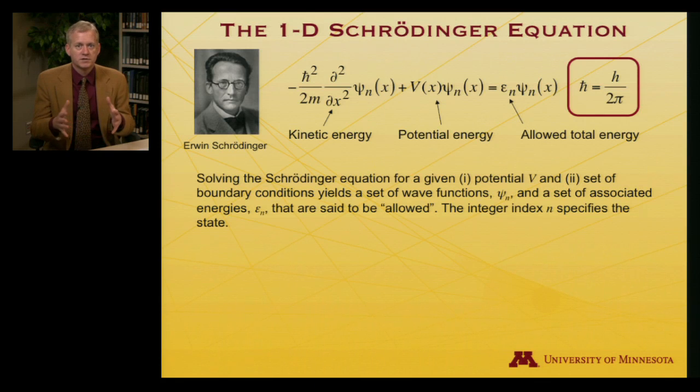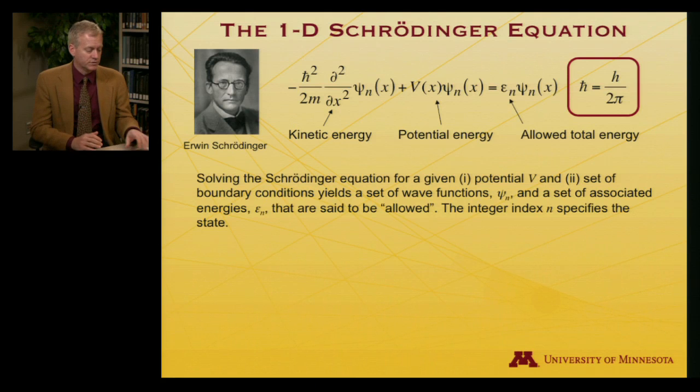It also defines a set of boundary conditions. So that's typically quite important in quantum mechanics. Where do we know the system is not allowed to be? So a particle in a box, for instance, can't be outside the box. Given those potentials and boundary conditions, we solve for the wave functions. And each of those wave functions, they're indexed by n, just some integer. We count them. One, two, three, four, five. And every one of the wave functions has an associated energy. And those are the allowed energy levels. We say they are allowed.